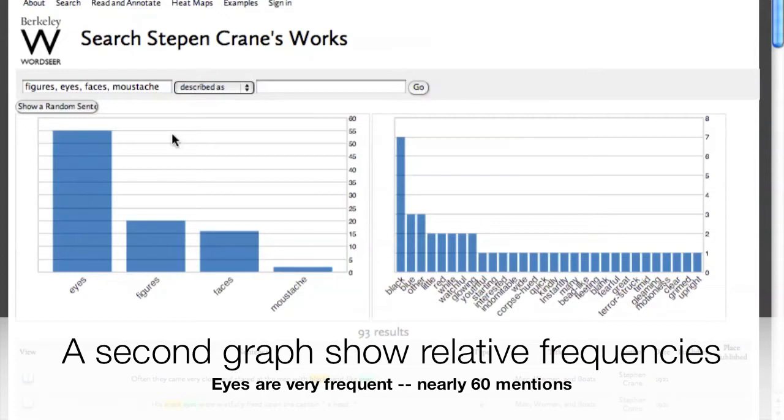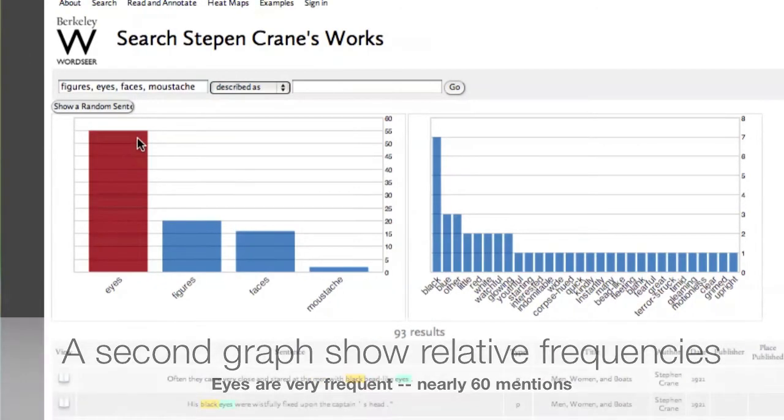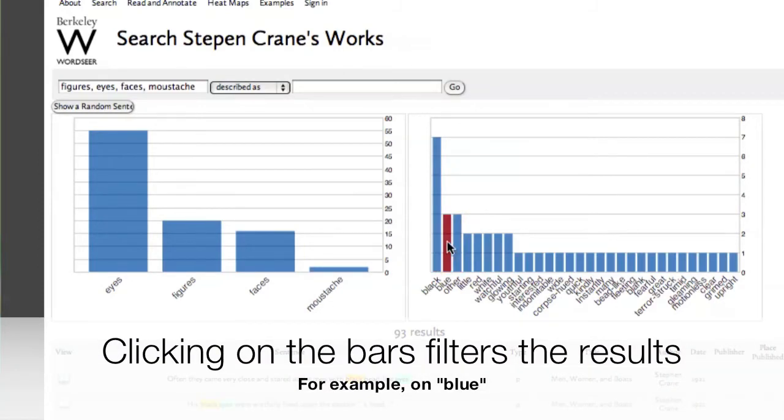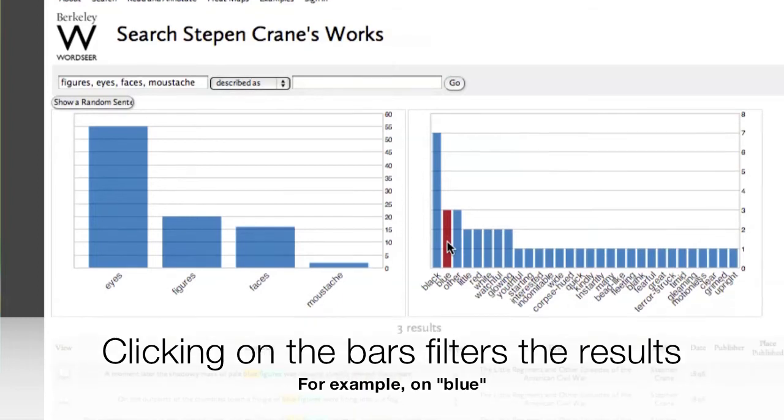Clicking go gives me the following list of search results. Now, I have two bar graphs. The one on the left shows me the relative frequencies of the words that I typed in. For example, eyes is the most frequent, with about 60 occurrences.